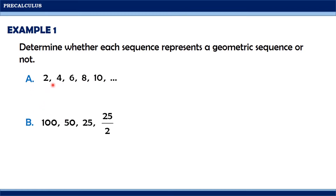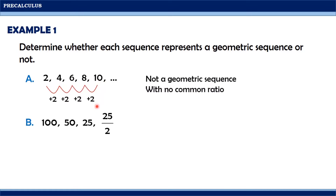Looking at the pattern of this sequence, notice that from 2 it became 4, meaning we added 2. From 4 to 6, we also added 2. From 6 to 8, we also added 2. From 8 to 10, we also added 2. Notice that the pattern is not multiplication nor division. Therefore, this sequence is not a geometric sequence because it does not have a common ratio.